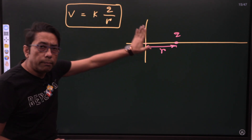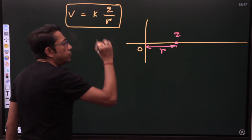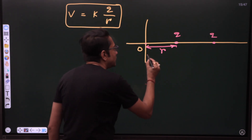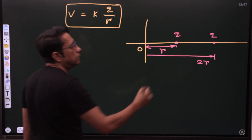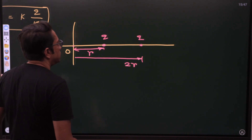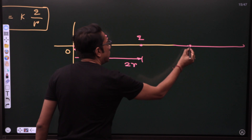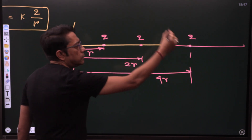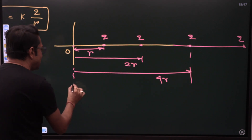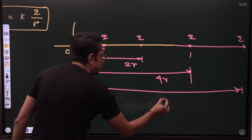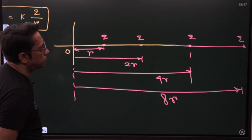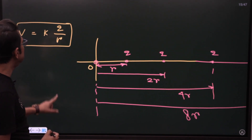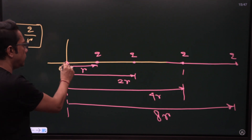For now, stay in maths. At this point, if another charge Q is placed at distance 2R — double the distance — and more charges Q at distances 4R and 8R, then the question is: what is the total voltage, or potential, at point O due to all these four charges?